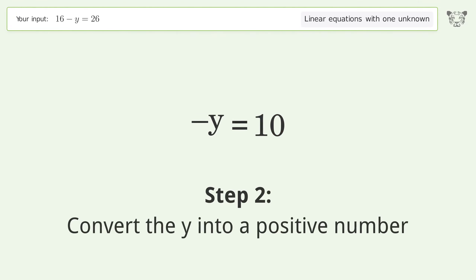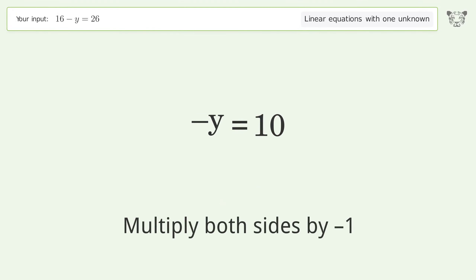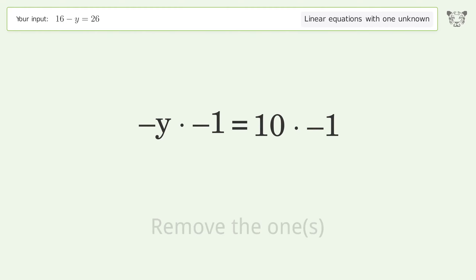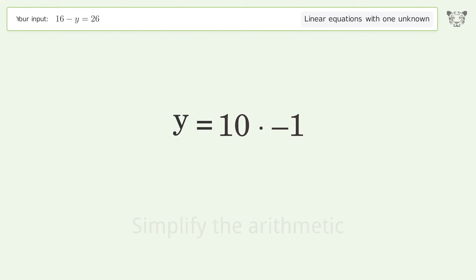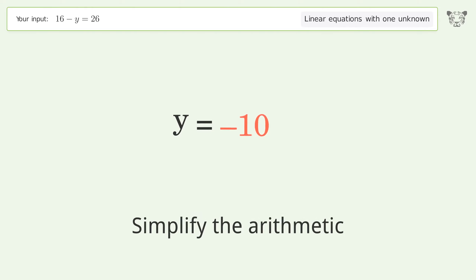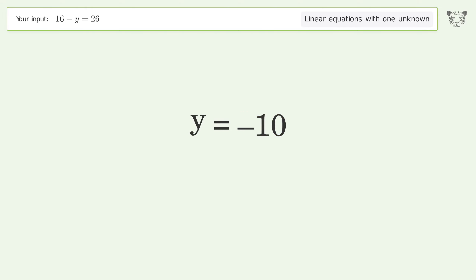Convert y into a positive number: multiply both sides by negative one. Remove the ones, simplify the arithmetic, and so the final result is y equals negative 10.